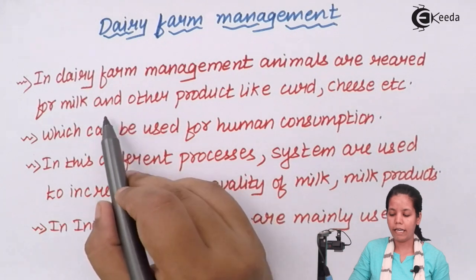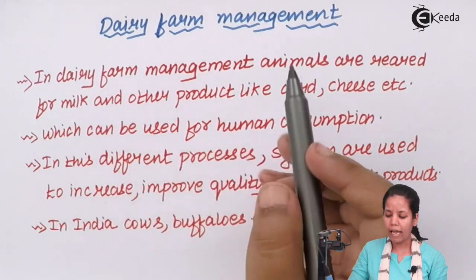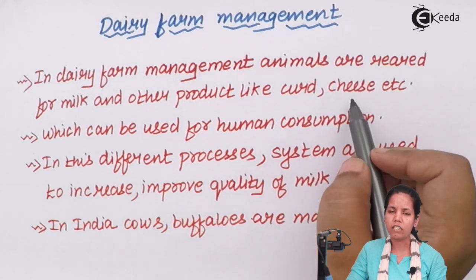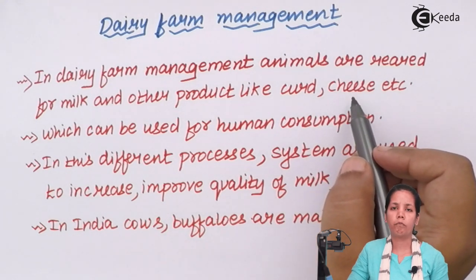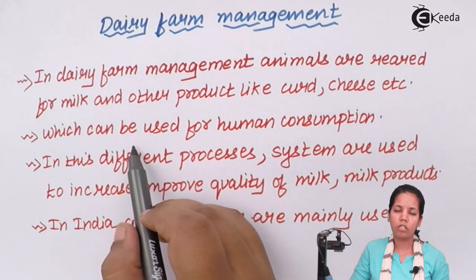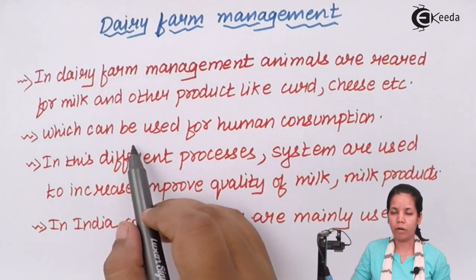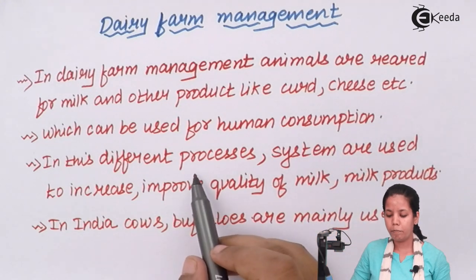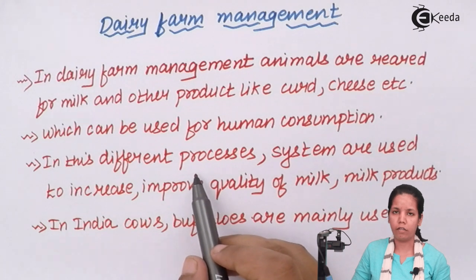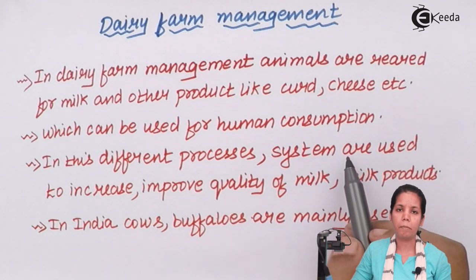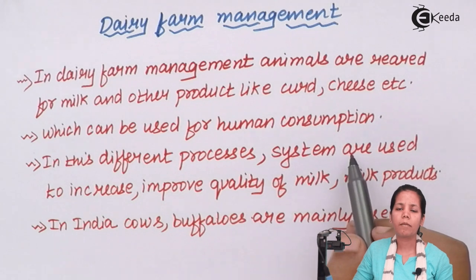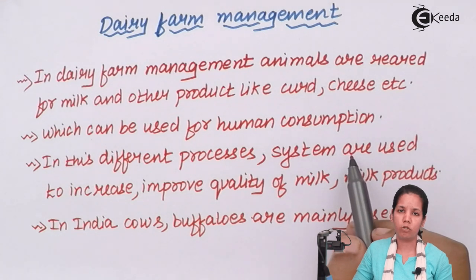Animals reared in dairy farms are kept for milk and other products like curd, cheese, or yogurt, which are byproducts of milk. Different processes and patterns are used for dairy farming. Every state has its own set parameters, and different systems are used — for example, giving animals certain hormones, providing them with nutrient-rich edible materials to increase milk production, and giving them vaccinations. These systems basically increase as well as improve the quality of the milk.